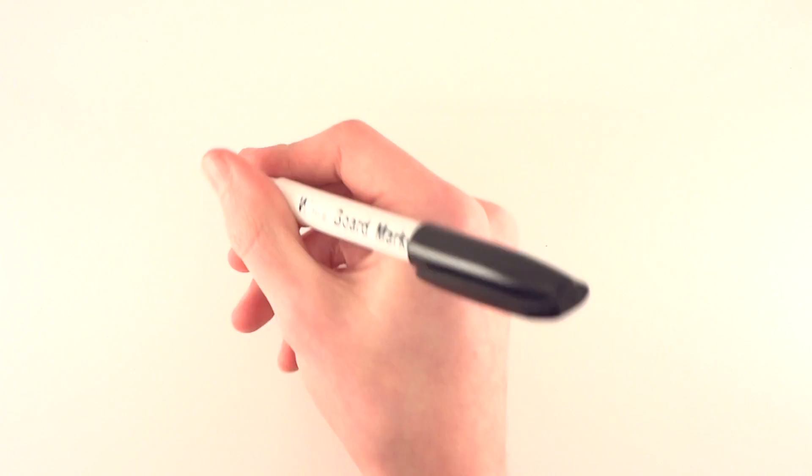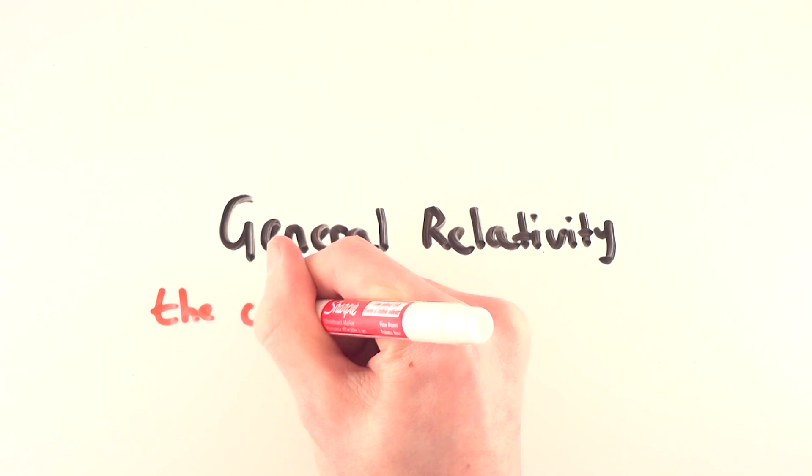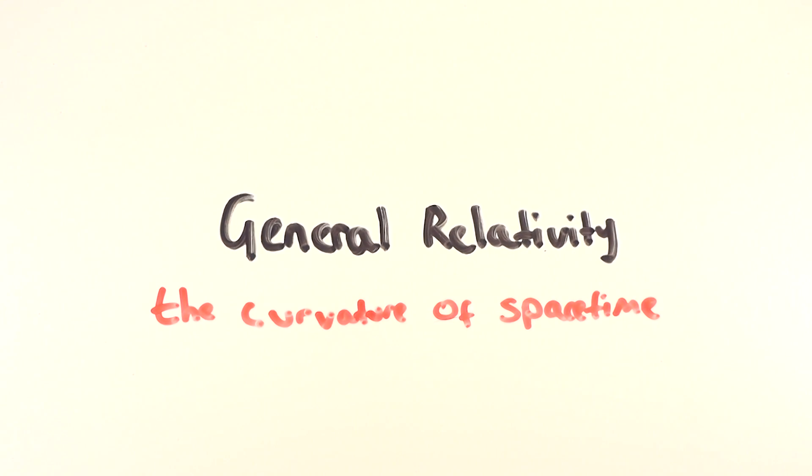So what is our current theory of gravity? It's called general relativity, and with general relativity, for the first time we had an idea on what gravity is. Instead of being a magical force, gravity is described as the curvature of space-time.